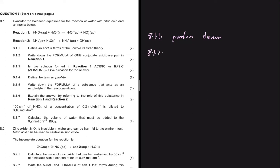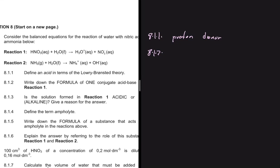8.1.2 says write down the formula of one conjugate acid-base pair in reaction one. We identify it using 8.1.1 — which compound donated a proton? Looking at reaction one, we can see that HNO3 initially, and on the right-hand side we have NO3 minus. So HNO3 has donated a proton — this is our acid.